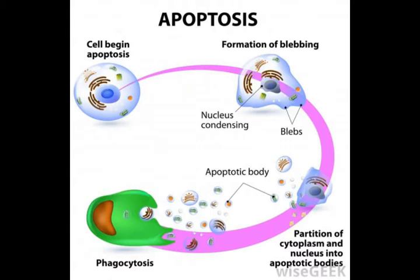These caspases are directly responsible for the cleavage of cellular proteins, such as cytoskeletal proteins, that lead to the morphological changes, including the splitting of digits, that is observed in cells undergoing apoptosis.